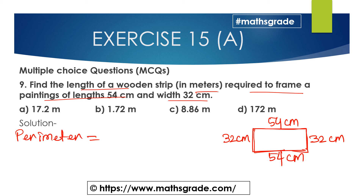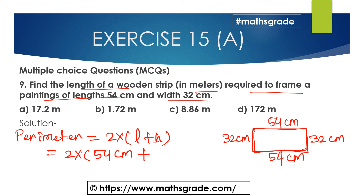In the middle of this rectangle, the perimeter formula is 2 multiplied by length plus breadth, that is 2 × (54 cm + 32 cm).